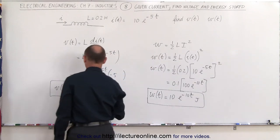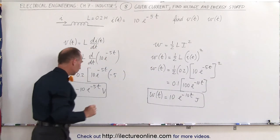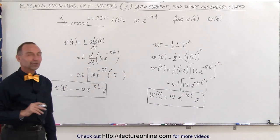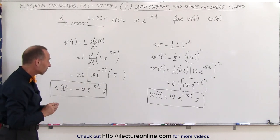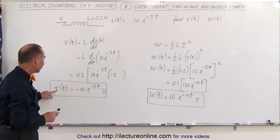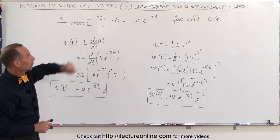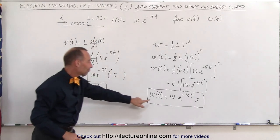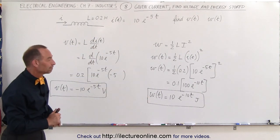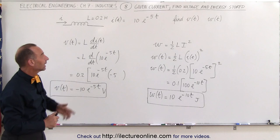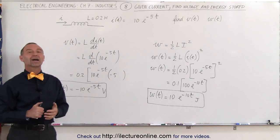The units for the energy expression would be joules, and the units for the voltage expression would be volts, when we put in the proper unit for time in each case. So that's how we find the voltage as a function of time given the current, and that's how we find the energy stored in the inductor as a function of time, given the current.